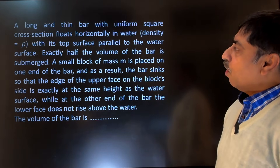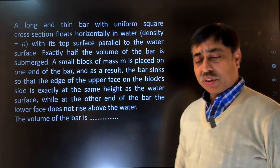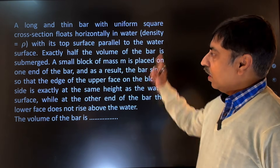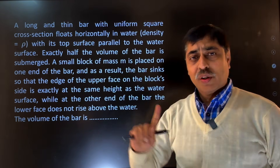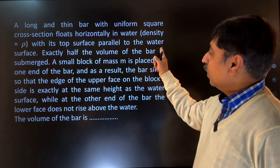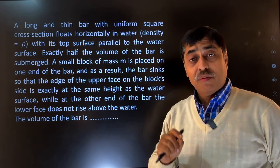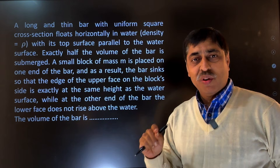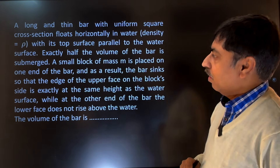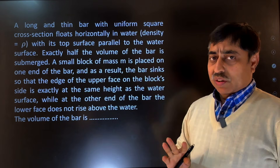The question says: a long and thin bar with uniform square cross section floats horizontally in water. The density of water is given as rho, with its top surface parallel to the water surface. The top surface of the bar being parallel to the water surface means the bar is horizontal.